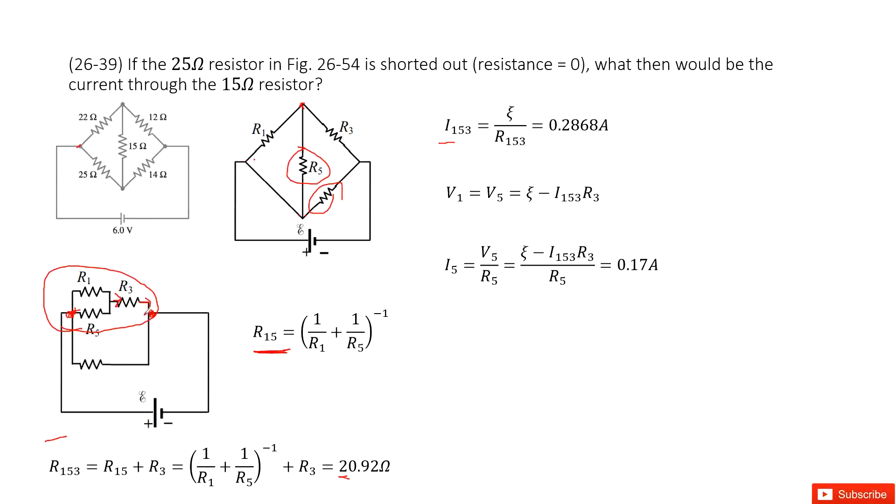Now very easily we can get the current for I5. It's the voltage V5 divided by R5. Input V5 inside. We input all the given quantities and answers there. Thank you.